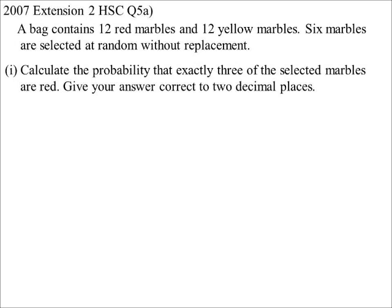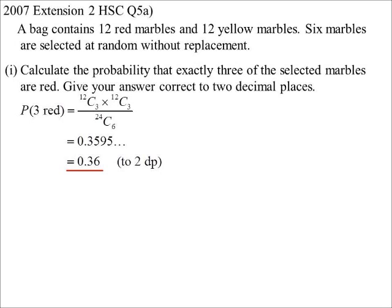So exactly three are red. In this case, permutation or combination? Yeah, so we're just selecting the marbles. We don't care the order we're pulling them out, so I'd do that as a combination as well. So bottom of the fraction 24C6, there's 24 marbles all up, I'm just going to select six. Top of the fraction, three of them are red, so from the 12 red ones I want to select three, which then means there's 12 yellow ones left and I'm going to select three from there as well. So we get 0.36. Now that in itself is not a particularly difficult combination question, but we're going to need this answer for the next bit.